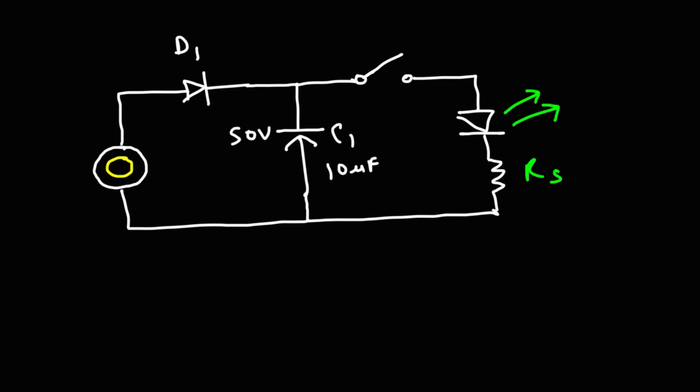So once we compress the piezoelectric device, current will flow through D1 and it's going to charge up C1. Now when C1 is charged, we can close the switch S1. And so current can flow from the capacitor through the LED, turn it on, back to the negative terminal of the capacitor.